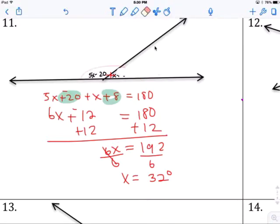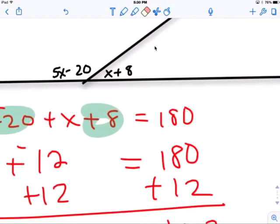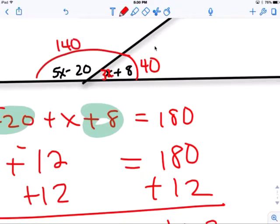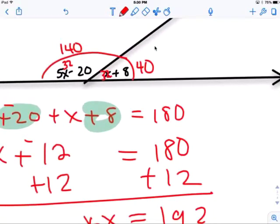So x is 32 degrees, therefore you put 32 into here, and therefore this is 40, and that's 40. This might be 140 because it'd add up to 180. Multiply that, let's see, 32 times 5, 160 minus 20 is 140, yep. Okay, that's correct, just checking, making sure.